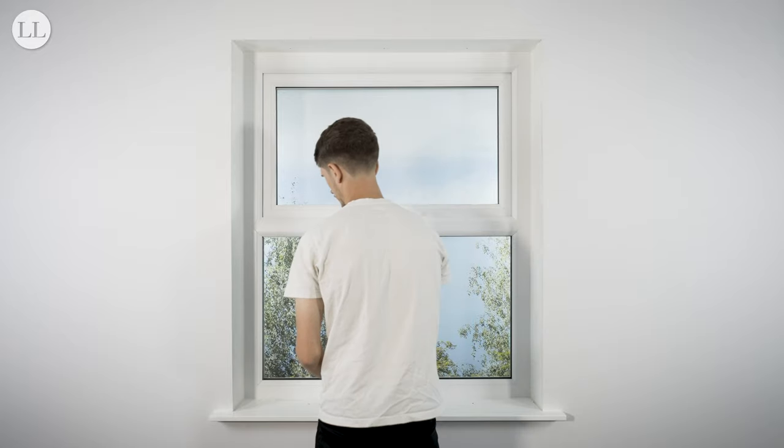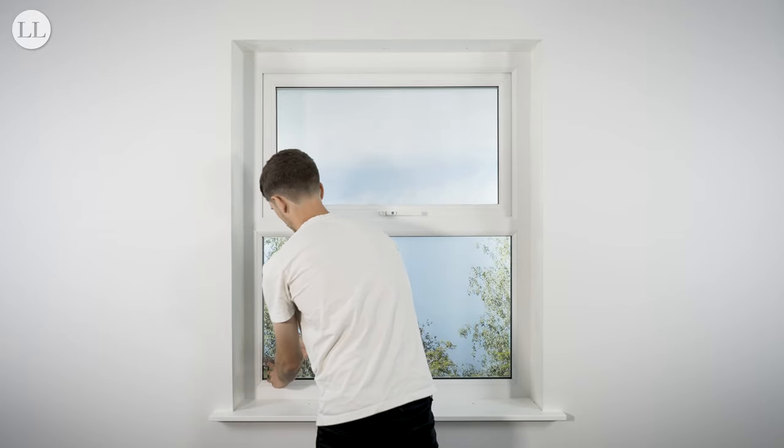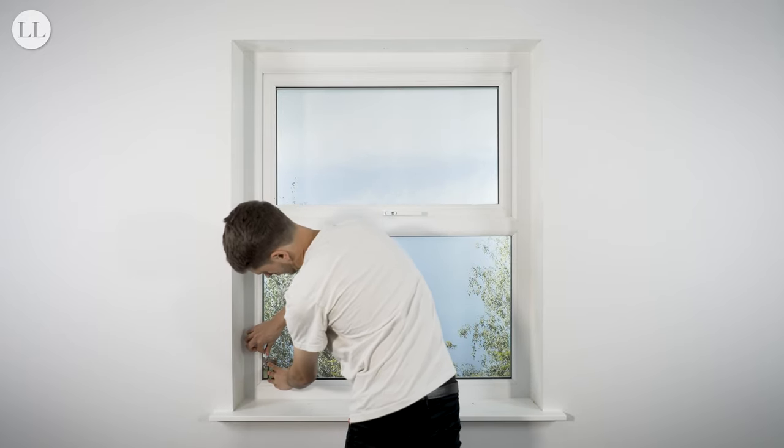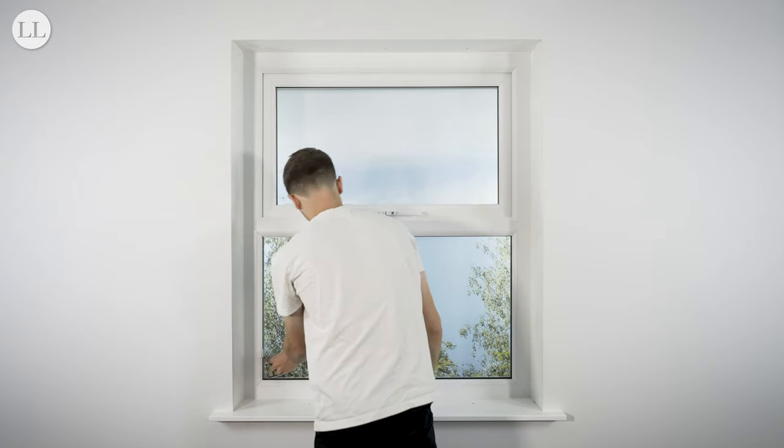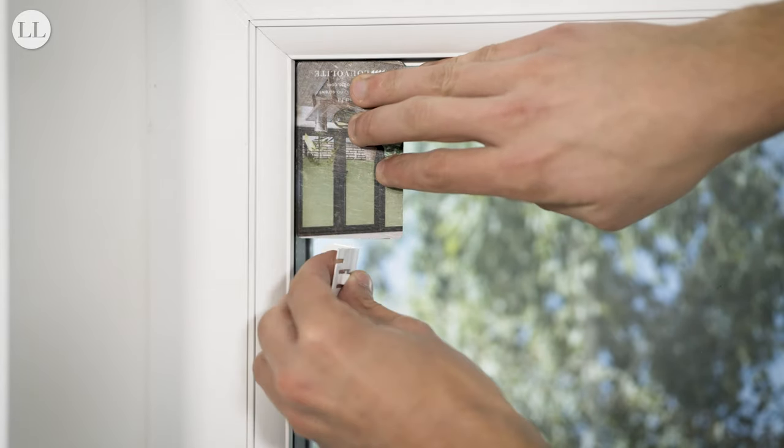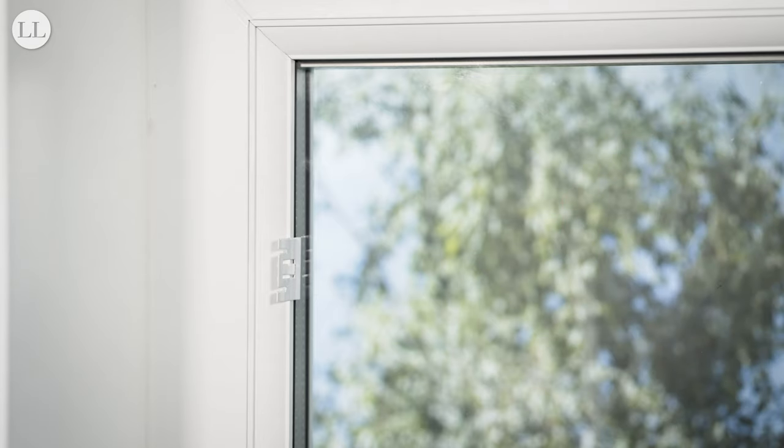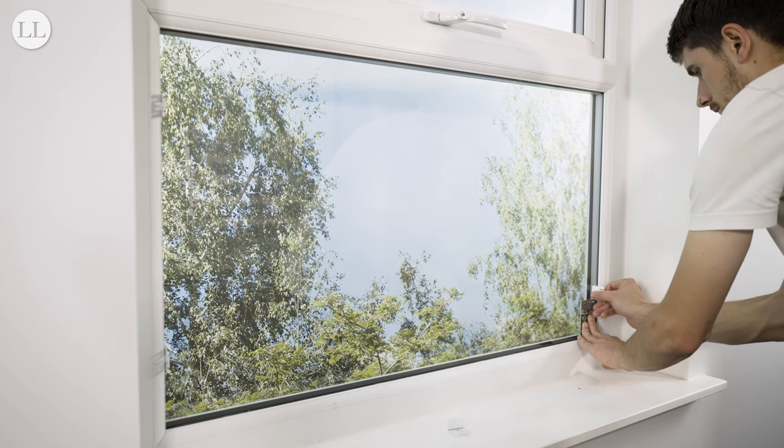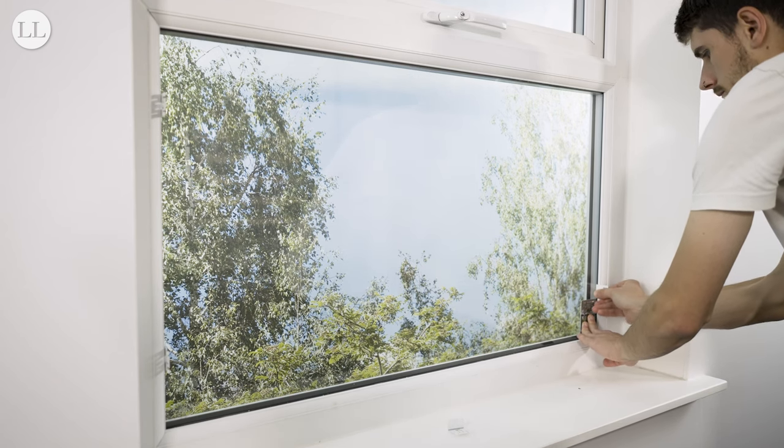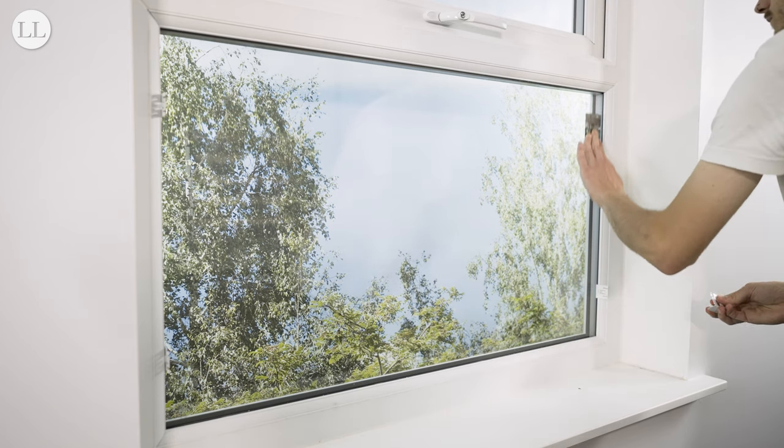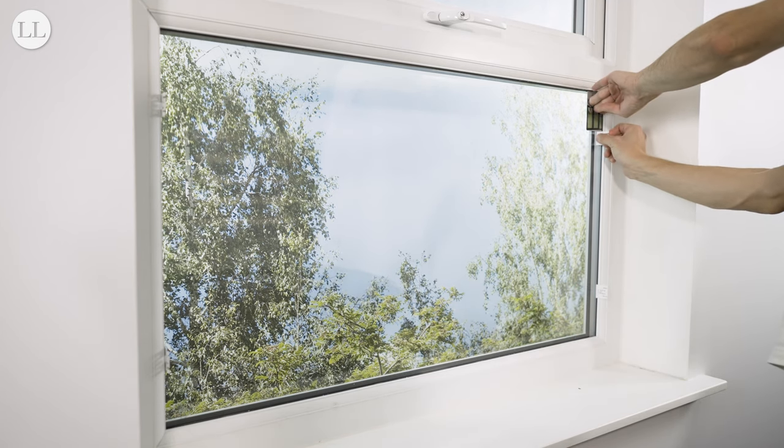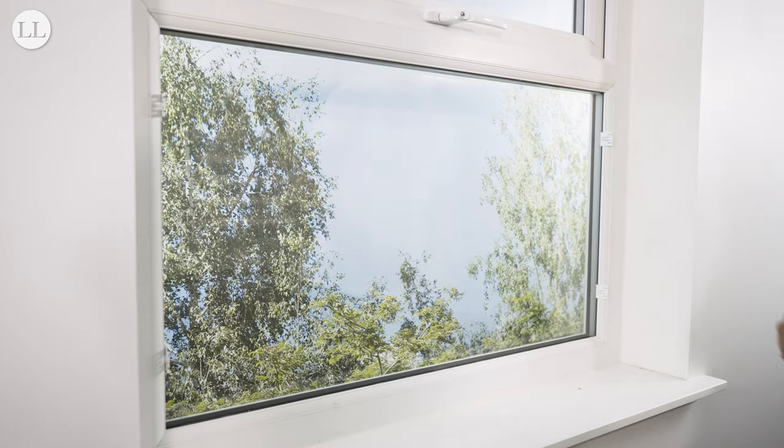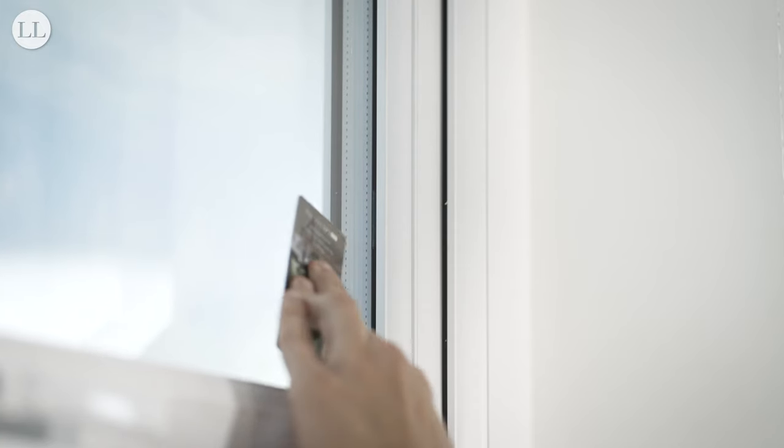Now move on to installing the brackets. Using a guide card or credit card, pop the brackets into the gasket seal on each side of the window. Do the same for the top window.